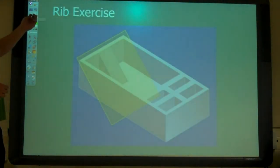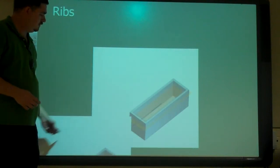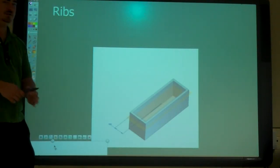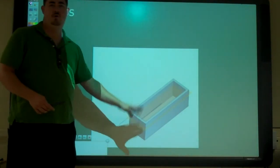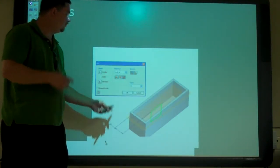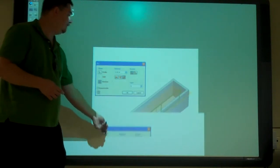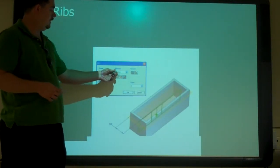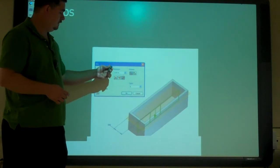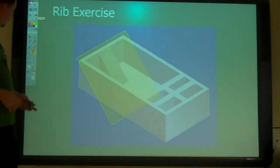So if we have ribs, we just draw a sketch plane, we just draw a line, whatever we want our rib to be. Then we go to rib. Now we can tell it with a profile, a direction, and then a width right here and it puts in a bit of a rib. So here is the part that we are going to do.